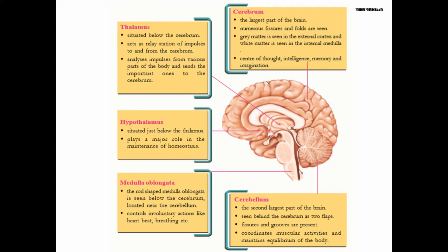The thalamus acts as a relay center for important impulses. The hypothalamus regulates many body functions. The cerebellum is the second largest part of the brain and is responsible for involuntary reactions and body balance.